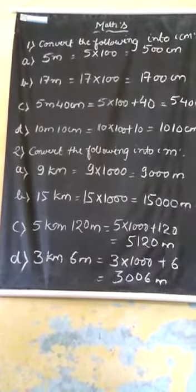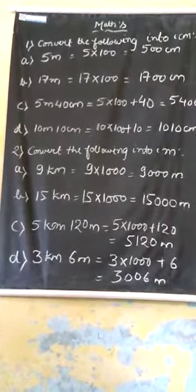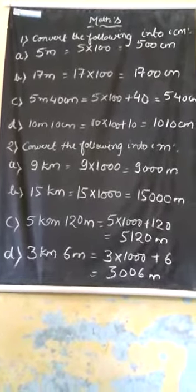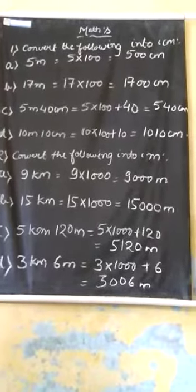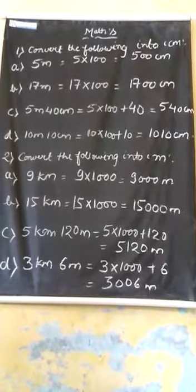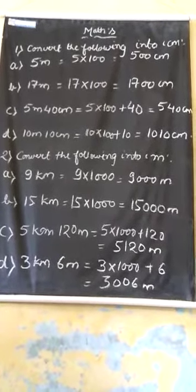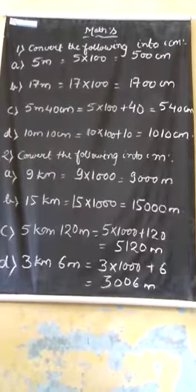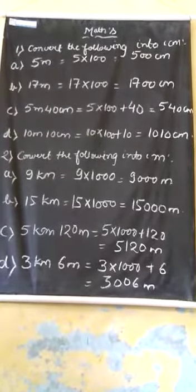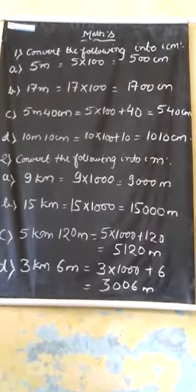Question number D: 3 kilometers and 6 meters. First we change 3 kilometers into meters, it will be 3000 meters. And add 6 meters, it will be 3006 meters. Thank you.